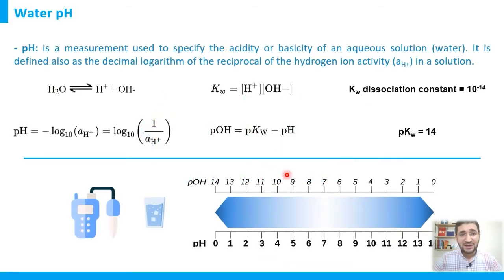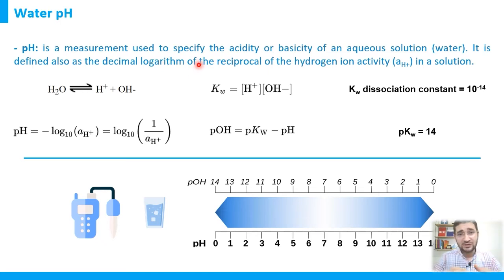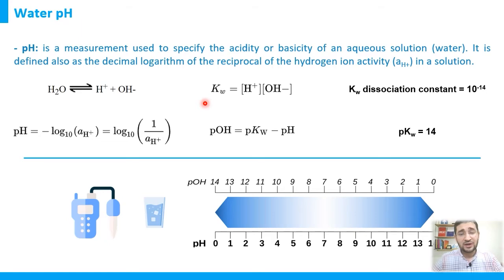Simply, we identify pH as the measurement used to specify the acidity or basicity of an aqueous solution — in our case, water. It is also defined as the decimal logarithm of the reciprocal of the hydrogen ion activity in a solution.